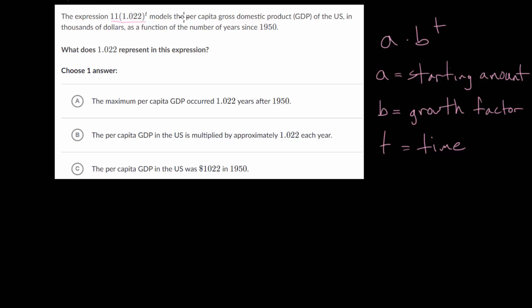For this particular problem, the expression 11 multiplied by 1.022 raised to the t power models the per capita gross domestic product, or GDP, of the U.S. in thousands of dollars as a function of the number of years since 1950. We need to figure out what 1.022 represents in this expression. Let's first rewrite it. We have 11 times 1.022 raised to the t power.